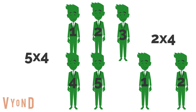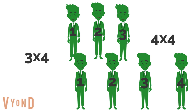Maria thinks of 7 rows of 4 chairs as 5 rows of 4 chairs and another 2 rows of 4 chairs. Could Maria have broken the 7 rows any other way? Yes, she could have broken the 7 rows into 3 rows of 4 chairs and 4 rows of 4 chairs.